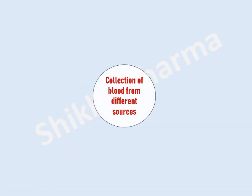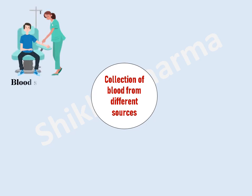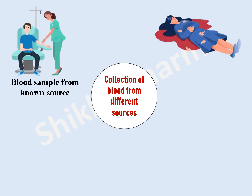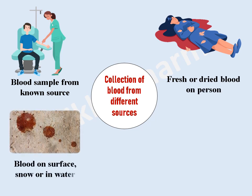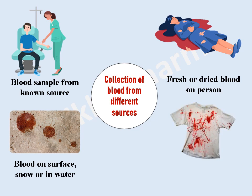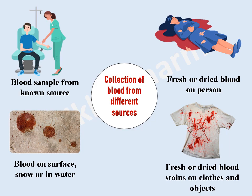In this lecture, we will study the collection of blood from different sources, for example: 1. Blood samples from a known source, 2. Fresh or dried blood on a person, 3. Fresh blood on surfaces or in snow or water, and 4. Fresh or dried blood stains on garments and objects.